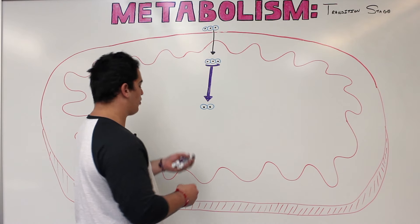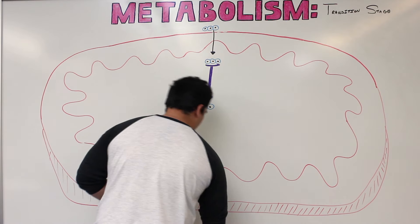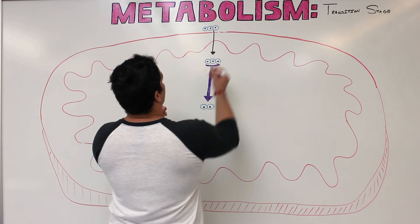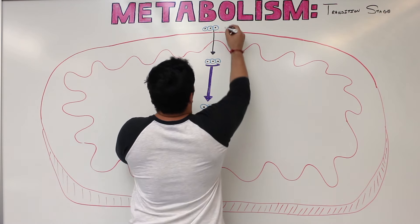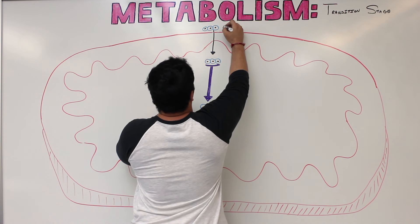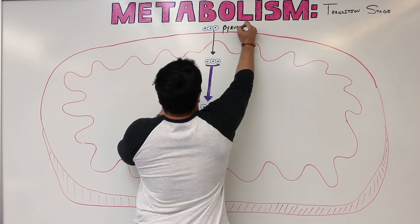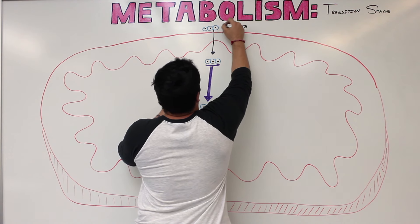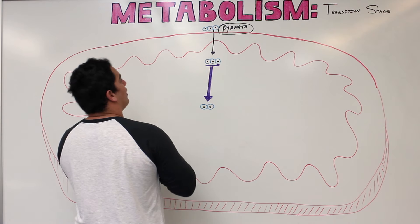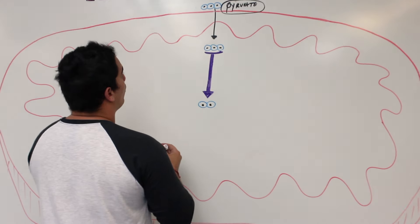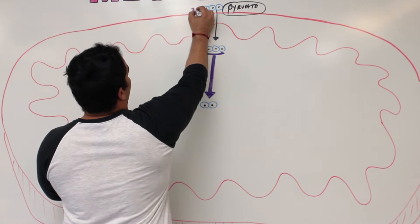So if you remember, we left off with forming pyruvate from glycolysis. From glycolysis we made pyruvate, and pyruvate was a three carbon molecule that we formed from the end product of glycolysis. So again, it's three carbons.